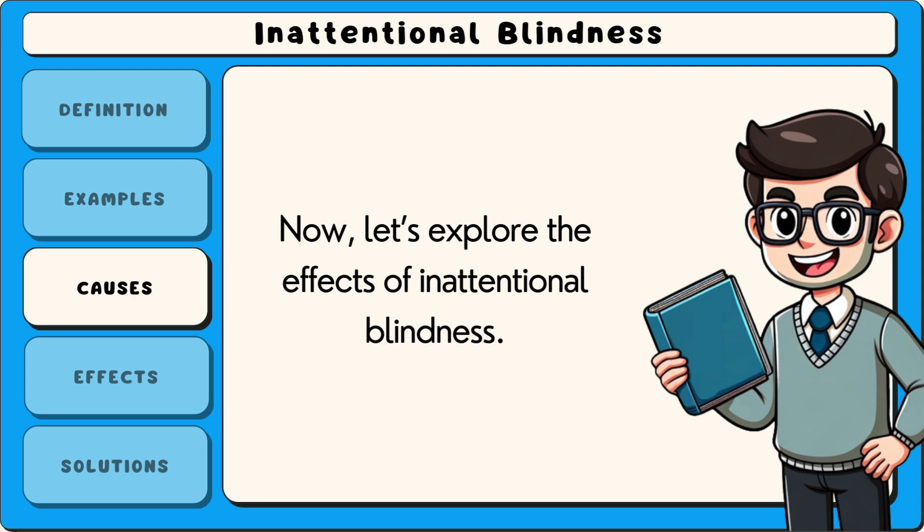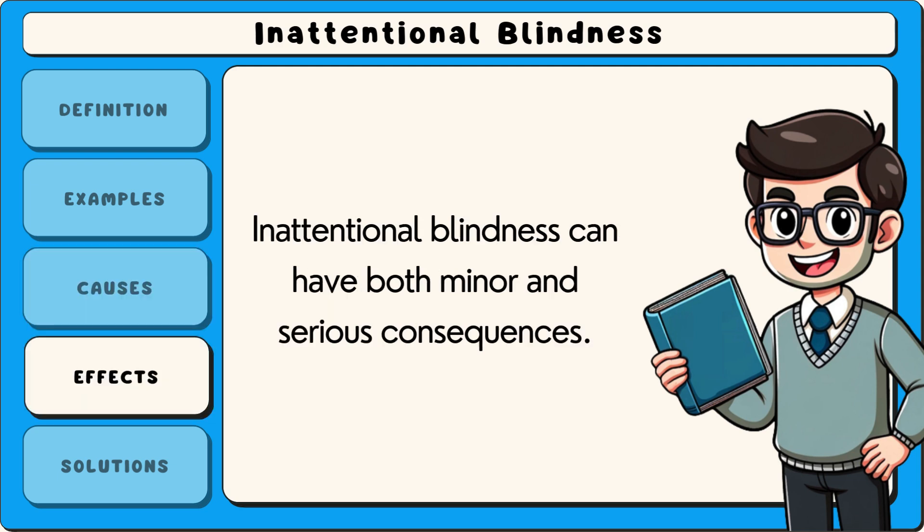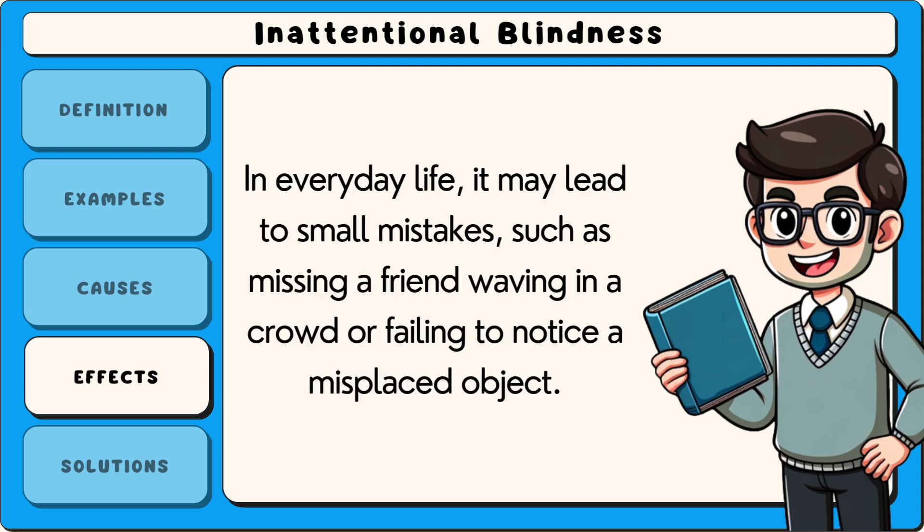Now let's explore the effects of inattentional blindness. Inattentional blindness can have both minor and serious consequences. In everyday life, it may lead to small mistakes, such as missing a friend waving in a crowd, or failing to notice a misplaced object.